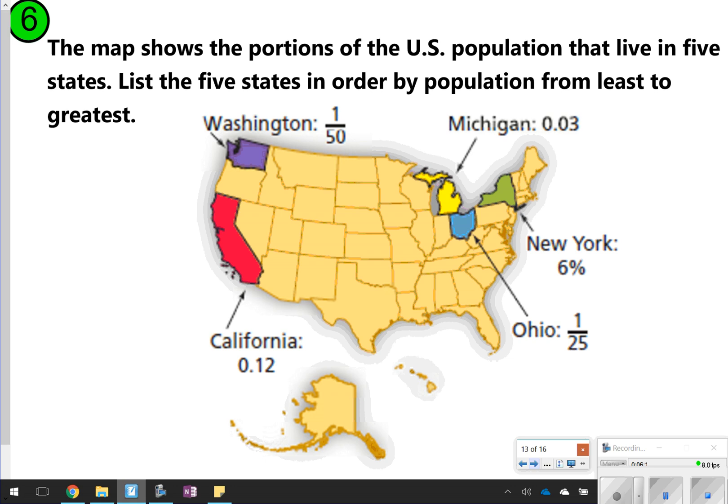The next one you're going to try is the map shows the portions of the United States population that live in five states. List the five states in order by population from least to greatest. Notice you've got a mixture of fractions, decimals, and percents here. So maybe whenever you're pausing the video, try to put them all in the same format. Go ahead and try this question, ordering from least to greatest, writing the states down, and then once you're done, click play.